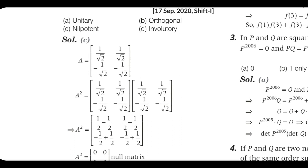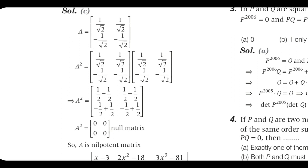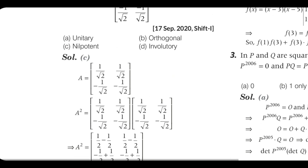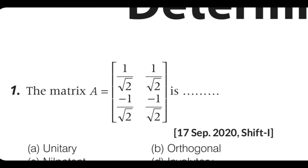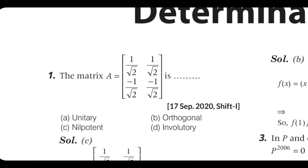A squared — A into A — gives null matrix, so this is nilpotent. For nilpotent matrices of this type, the form A, A, minus A, minus A applies. The matrix 1, 1, minus 1, minus 1 is nilpotent. For these types of questions, nilpotent is the answer.